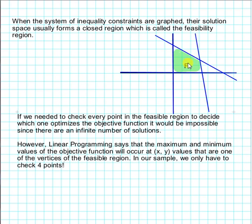So when we are trying to optimize the objective function, we can pick any point in the feasible region as well as the points along the boundaries. As you can see, if we wanted to check all the points in the feasible region it would be impossible because there is an infinite number of points.